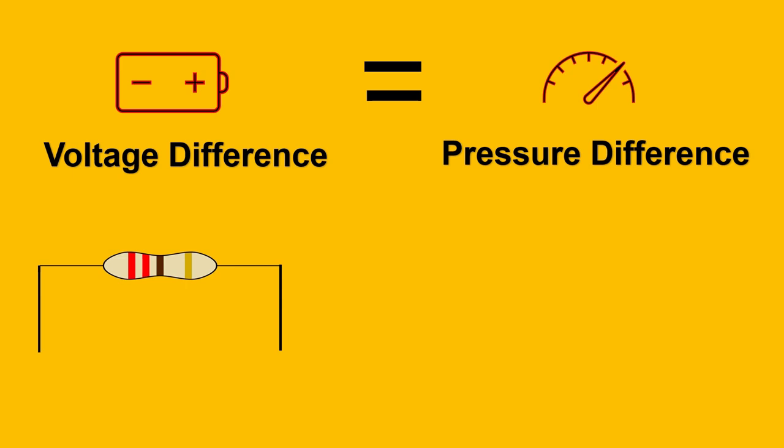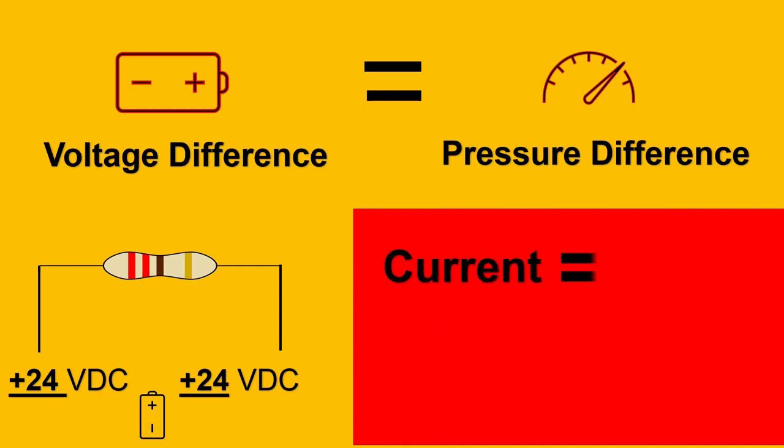So imagine here's your resistor and you put it to a battery but you connect 24 volts on both the sides. Can you tell me what will be the current here? The answer is 0 amperes. Why? Because even if you've given a good voltage but it is same on both the sides.